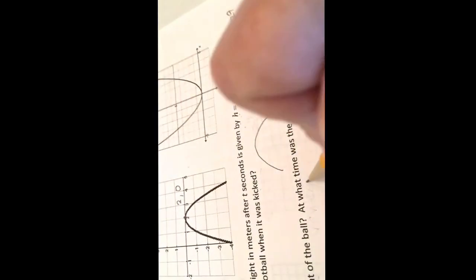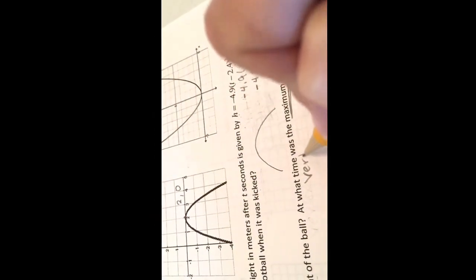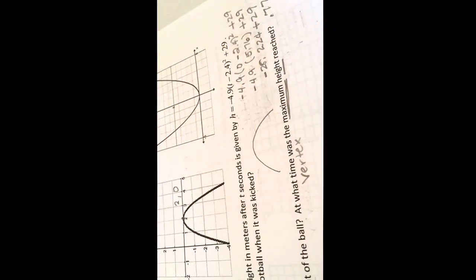So at times 0, the ball was barely off the ground. Now, when does the ball reach its maximum height? Okay, it would reach its maximum height at the vertex.